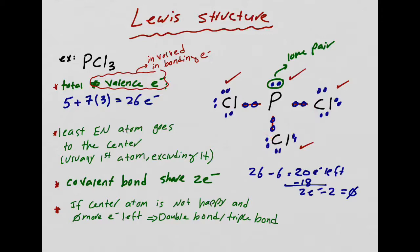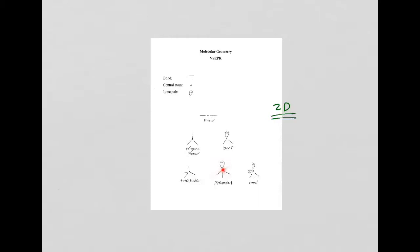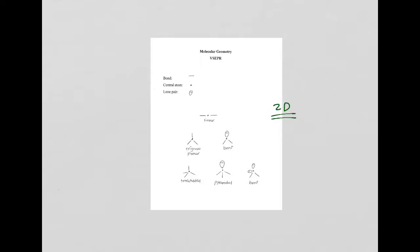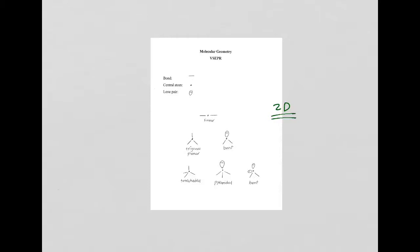For PCl3: the center atom has a lone pair and three bonds. Looking at the geometry sheet — center atom, three bonds, and a lone pair — the geometry is pyramidal. This would be the correct way to draw it out.